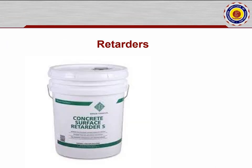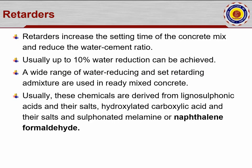The next type of chemical admixture is the retarder. As the name implies, it increases the setting time of the concrete mix and reduces the water-cement ratio. If concrete normally takes seven hours to set, using a retarder extends that time. Up to 10 percent water reduction can be achieved. Retarders are specified in powder or liquid form, indicating how much to use per quantity of cement.